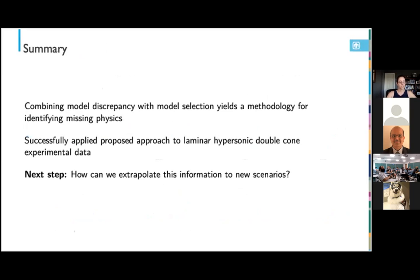So just a summary for this portion, we combined a model discrepancy with model selection to develop a methodology for identifying missing physics, which we successfully applied to a laminar hypersonic double cone experiment. Thinking ahead, we would like to be able to extrapolate that information to new scenarios for SPARC in the double cone. We're also working on automating that process of discrepancy model selection and implementing that in Dakota.